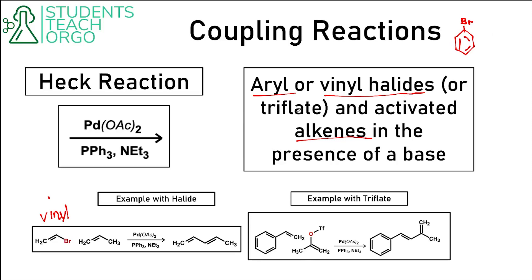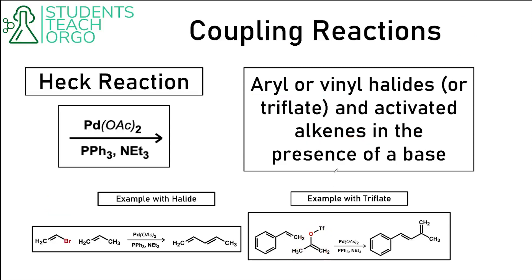A triflate would look something like this OTf compound, and this OTf is vinyl because it's connected to a carbon which is doubly bonded. We also need an alkene — you can see in both of the examples shown there is an alkene present. That's a really important part of this reaction.